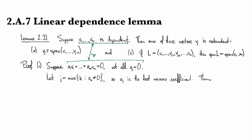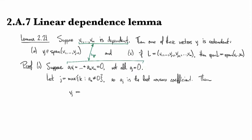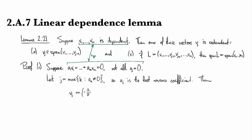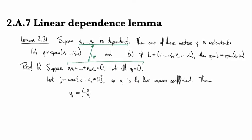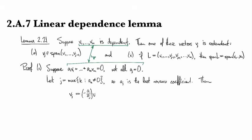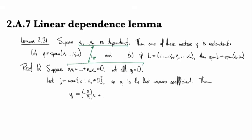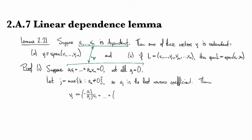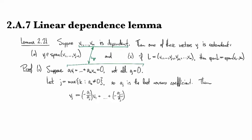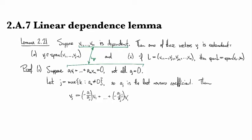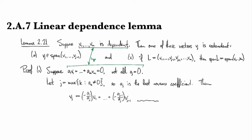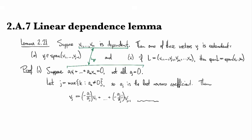Then we can write v_j in the same way that I showed you in a previous clip, by subtracting it over to the other side and then dividing by minus a_j.